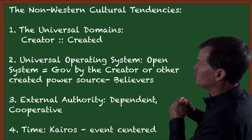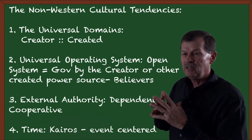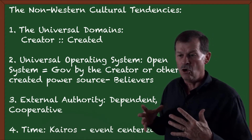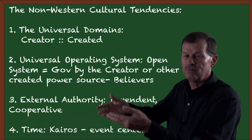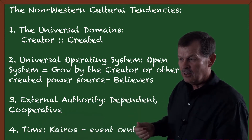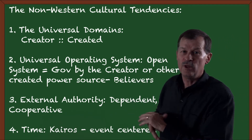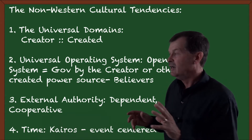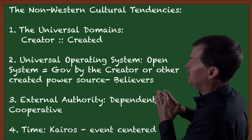Number three is external authority. Non-Western people are very externally authority-driven, meaning they do not take authority within themselves to make decisions. They prefer to follow orders and instructions, preferring to let the authority be responsible — they are servants to that authority. They are dependent and very cooperative within themselves. That is different from the Western model, which tends to be very autonomous and competitive, whereas non-Western culture tends to be dependent and cooperative.